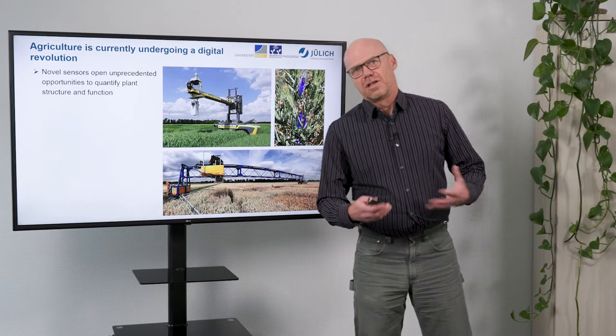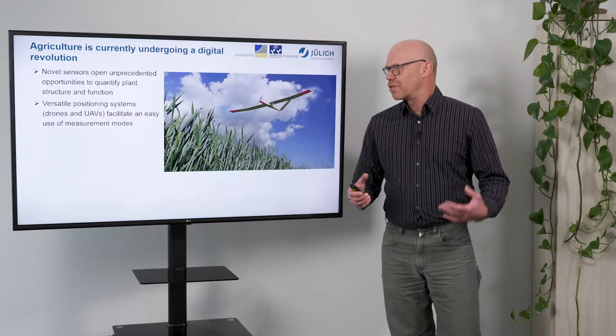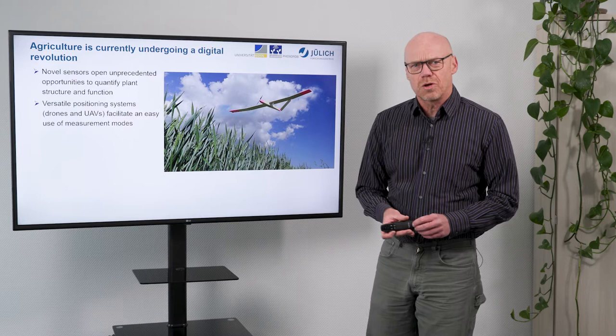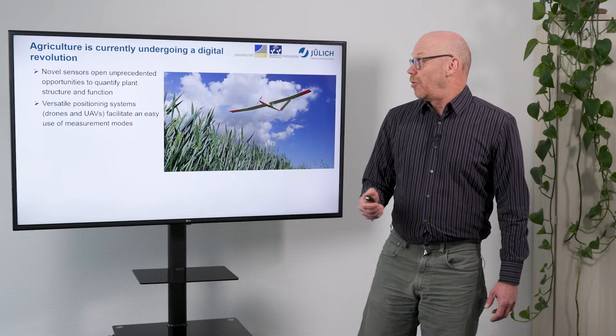At the moment, agriculture is going through a major digital revolution. We have new sensors and new modes of measurement which allow us to look into plants, into the structure and the function in plants. We also have new positioning systems. You may know the rapid development of drones and unmanned aircraft, which allow us to place our sensors on top of the fields, to fly over fields and to monitor plants online.